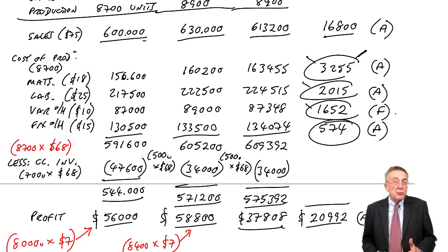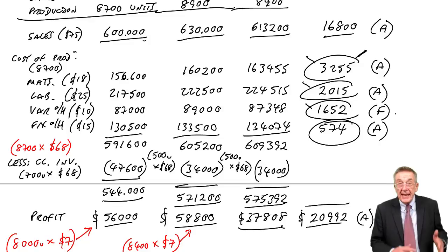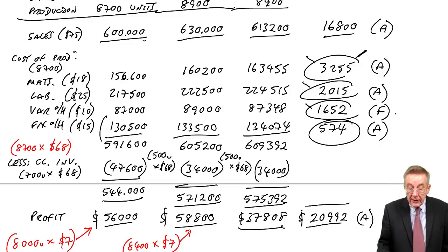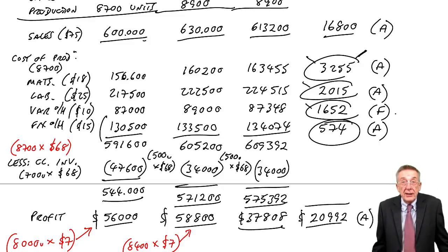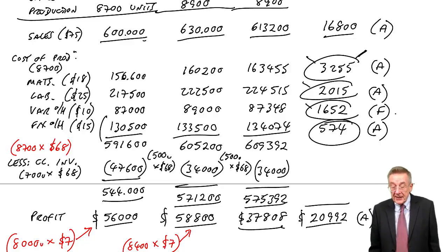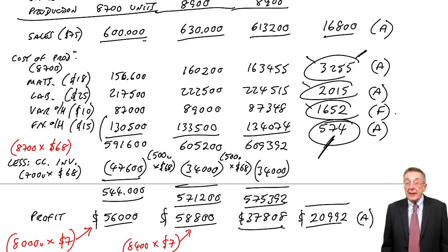So we had flexed them even though really, they should have stayed at the original $130,500. Fixed overheads shouldn't change at all. But thanks to this flexing business, we've ended up having to explain a difference of 574.